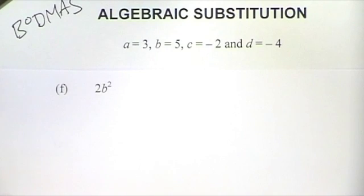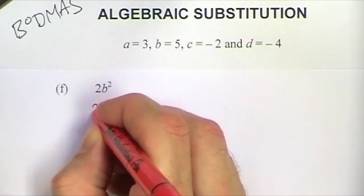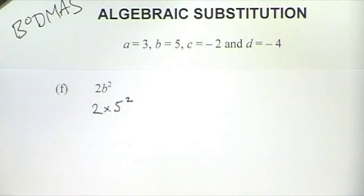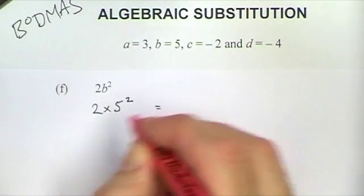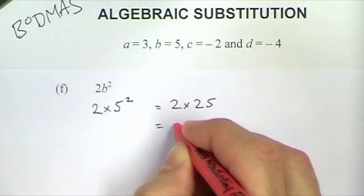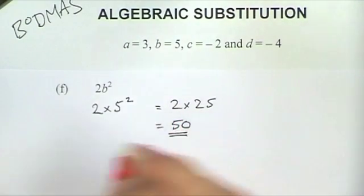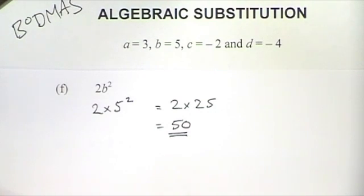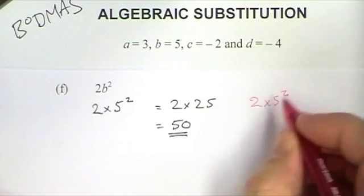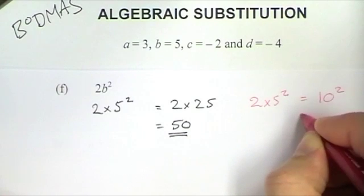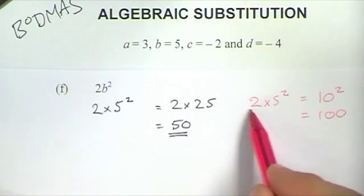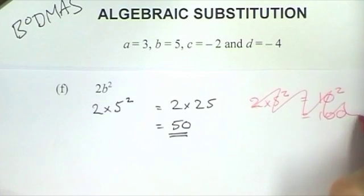The next expression is 2b squared. Substituting in gives us 2 times 5 squared. Using BODMAS, you have to do the square first. So 5 squared is 25, and that gives 2 times 25 which is 50. The most common error here would be to do 2 times 5 reading left to right to get 10, and then doing 10 squared which is 100. That doesn't follow the rules of BODMAS because you haven't done the squared bit before the multiplication.